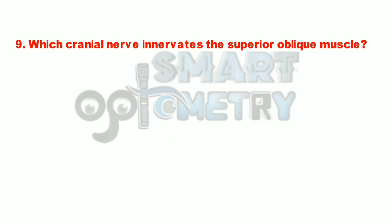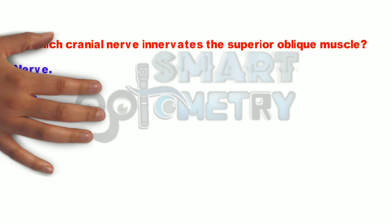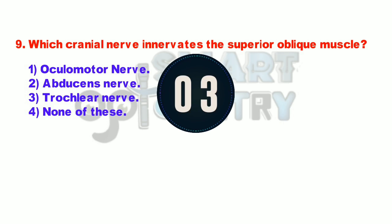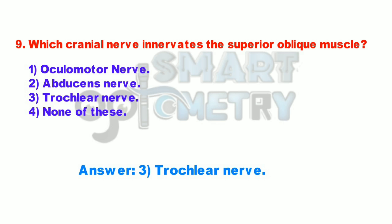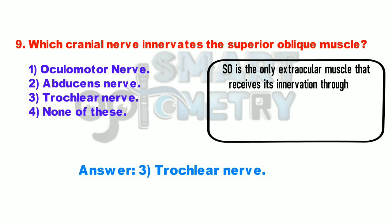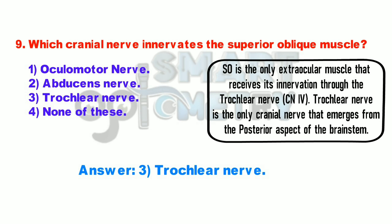Q9. Which cranial nerve innervates the superior oblique muscle? 1. Oculomotor nerve. 2. Abducens nerve. 3. Trochlear nerve. 4. None of these. Superior oblique is the only extraocular muscle that receives its innervation through the trochlear nerve. The trochlear nerve is the only cranial nerve that emerges from the posterior aspect of the brainstem.